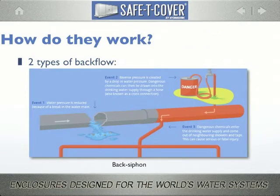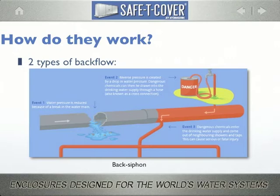The other event that causes backflow is back siphon. Back siphon happens when there is a negative pressure in the supply piping, allowing downstream substances to reverse direction and be pulled back into the potable water supply. Typical causes are water main breaks, or even higher than usual withdrawal rates, such as a flowing fire hydrant.